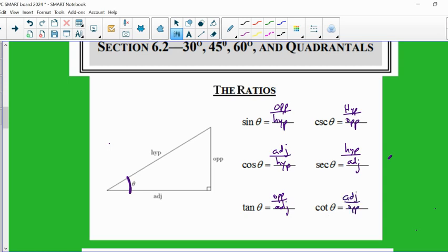And its reciprocal cotangent would be adjacent over opposite. So I listed them in this order simply because of their reciprocal relationships. Like sine and cosecant are reciprocals. Cosine and secant are reciprocals. Tangent and cotangent are reciprocals.